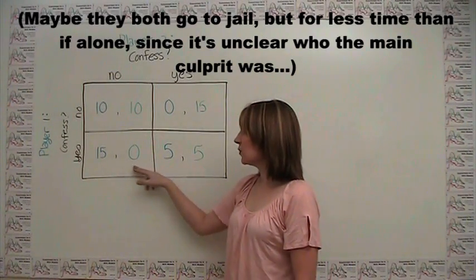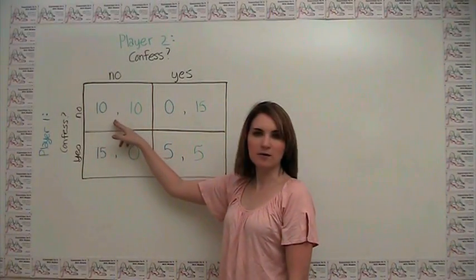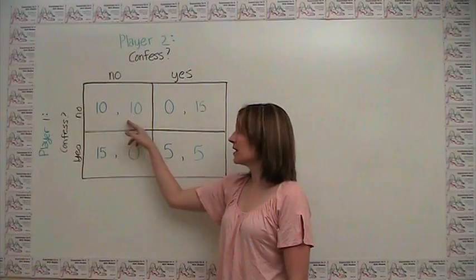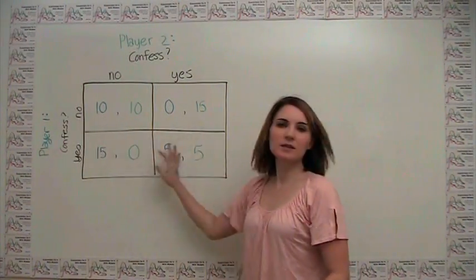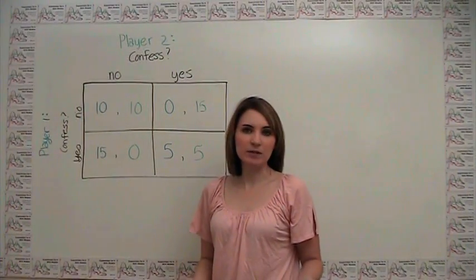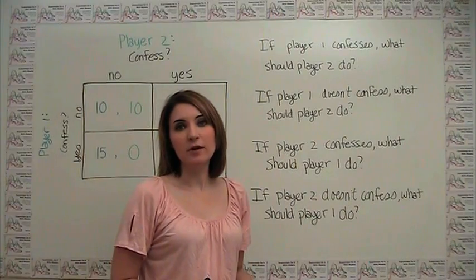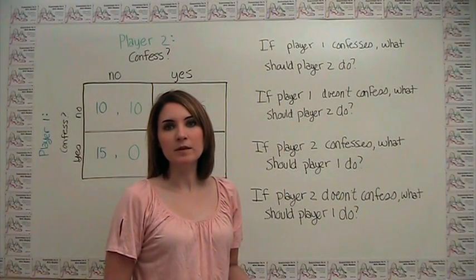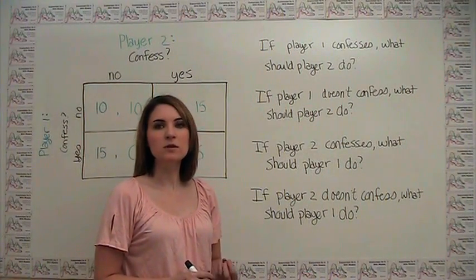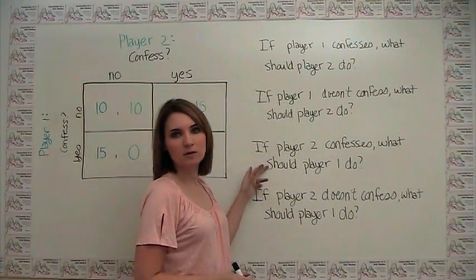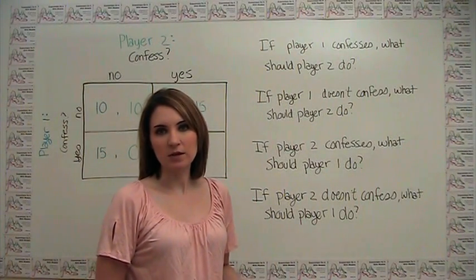Meaning, they're better off than if they just sat here and had the other guy rat him out, but not quite as well off collectively as if they both kept quiet. The question then becomes, given this structure, what's going to happen? In reality, both players are making the decision of whether or not to confess at the same time, but let's just pretend that they can guess or somehow know what the other person is going to do, and we can ask a number of hypothetical questions as to what the best responses for these players would be.